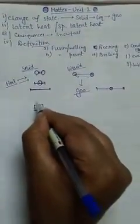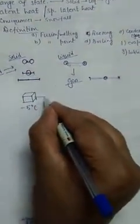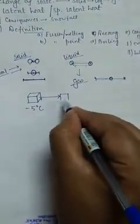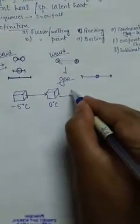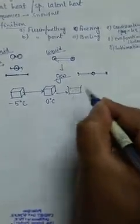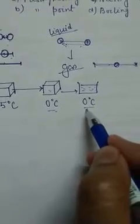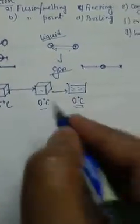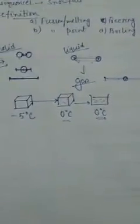For example, there is a piece of ice at minus 5 degrees centigrade. You heat it with a burner, and the ice reaches zero degrees centigrade. If you heat it further, the zero degrees centigrade ice changes into zero degrees centigrade water. At zero degrees centigrade, both ice and water can exist. The difference between zero-degree ice and zero-degree water is the difference of some internal heat energy — and that is known as the latent heat.